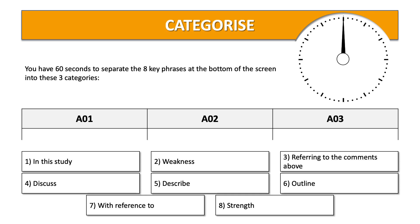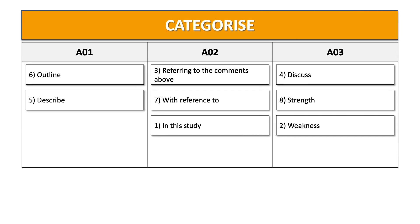Let's have a look at the answers and compare them to your own. For AO1, we should identify 'outline' and 'describe' as your AO1 assessment objective — you're describing something, so options five and six are your AO1. AO2 should be 'in this study,' 'with reference to,' or 'referring to the comments above' — you're applying to something. And AO3 lastly is your weakness, your strength, and your discuss.